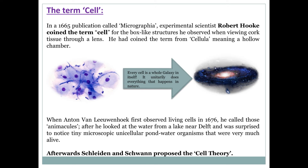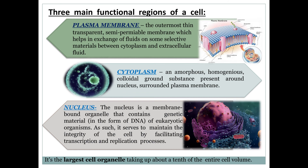Let's come to the main functional regions. A cell mainly has three functional regions. First, the plasma membrane. From the picture we can see that it is the outermost layer, which allows fluid and some selective materials to pass through it, meaning it is a semi-permeable membrane.